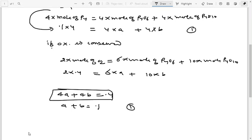And the second equation is 3a plus 5b equals 0.4. This is equation number 2.